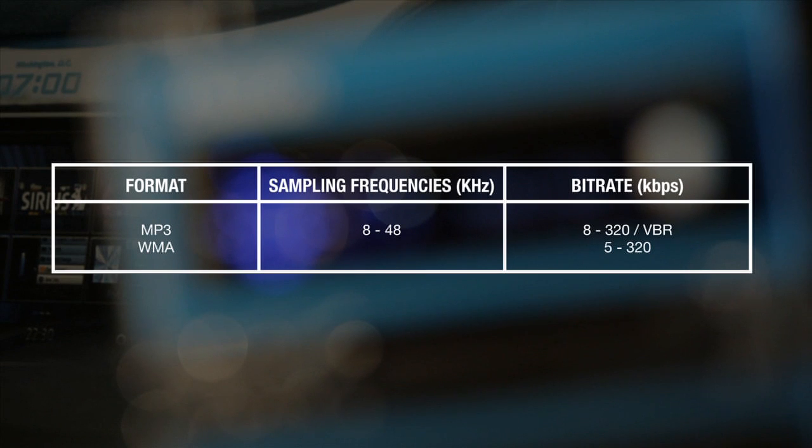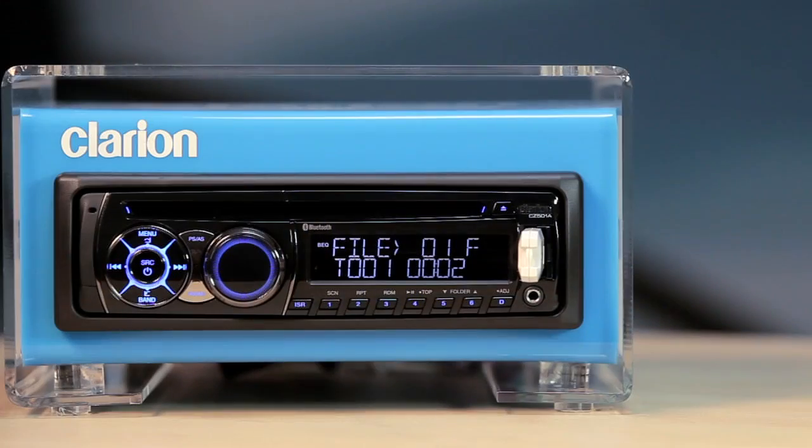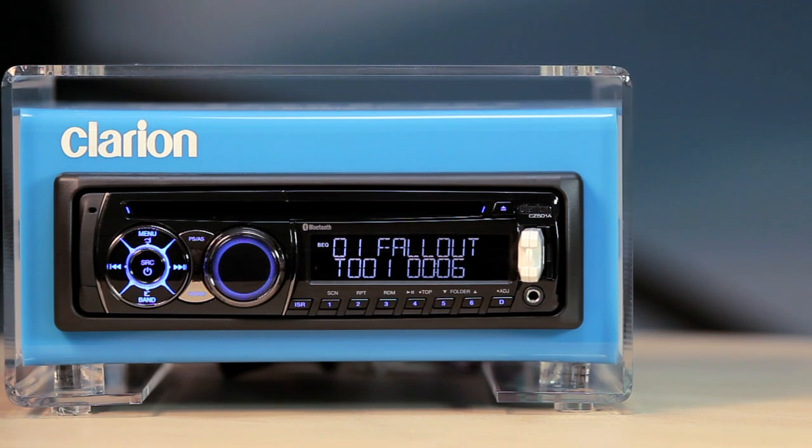The CZ501 can play music that is stored in USB devices. The music formats that can be played are MP3 and WMA. Please set your sampling frequencies and bit rates as follows. If your device is connected properly, the CZ501 will switch to USB mode automatically.